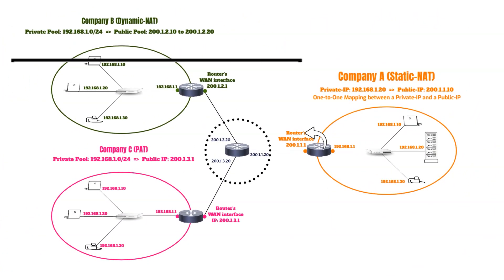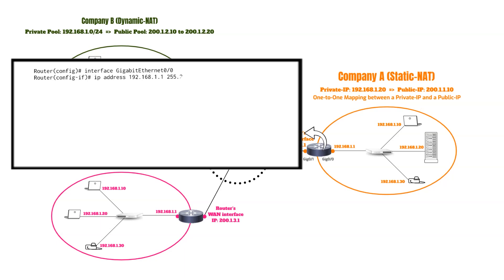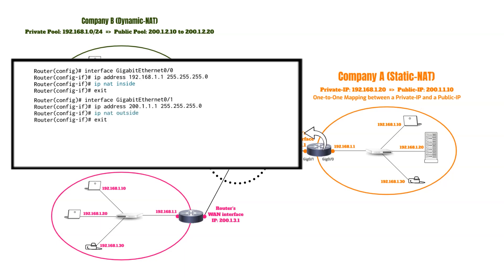Now let's see the static NAT configuration on a Cisco router. Here we are configuring the internal facing interface Gigabit Ethernet 0/0 with the IP address 192.168.1.1 as the gateway for internal devices. The command 'ip nat inside' designates this interface as the inside interface for NAT, where traffic will originate from the private network. Next, we configure the external facing interface Gigabit Ethernet 0/1 with the public IP address 200.1.1.1. The command 'ip nat outside' marks this as the outside interface, meaning it represents the public-facing side where traffic exits and enters the network.